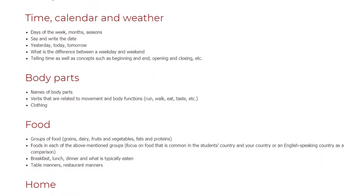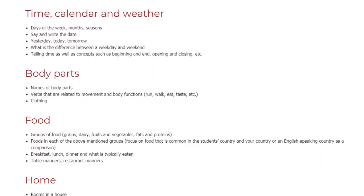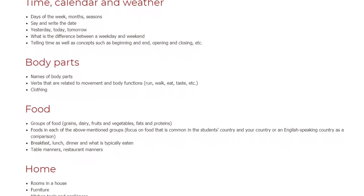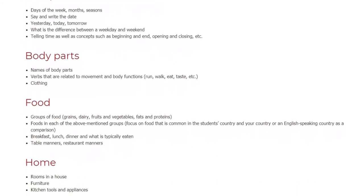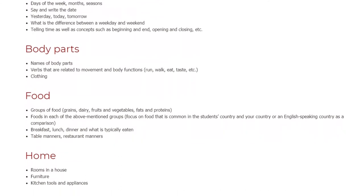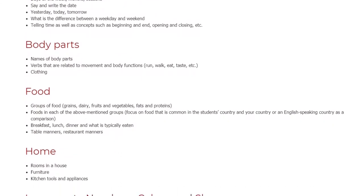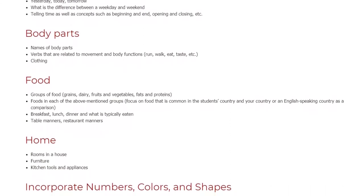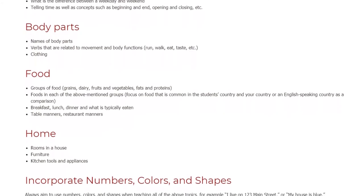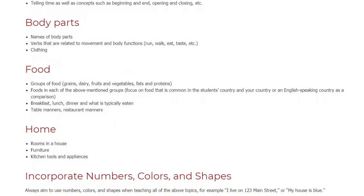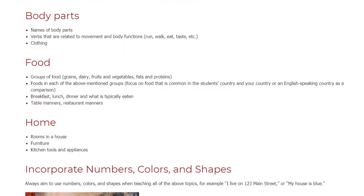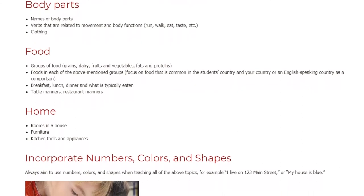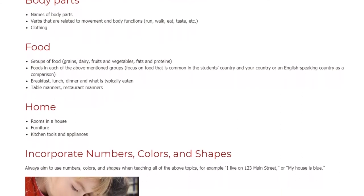Body parts: names of body parts, and verbs related to movement and body functions — run, walk, eat, taste, etc. Clothing. Food: groups of food — grains, dairy, fruits and vegetables, fats and proteins. Foods in each of those groups, with a focus on food common in the student's country and your country or an English-speaking country as a comparison. Breakfast, lunch, dinner, and what is typically eaten. Table manners and restaurant manners.